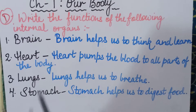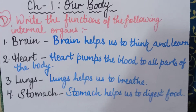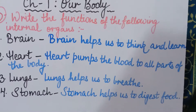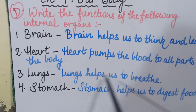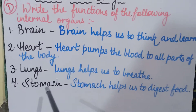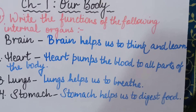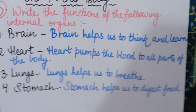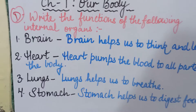The third internal organ is lungs — L-U-N-G-S. Lungs help us to breathe. If we cannot breathe, we cannot survive or stay alive. So lungs are also very important. The fourth and last internal organ is stomach. The function of stomach is to help us digest food — whatever we eat, our stomach helps us to digest that food.